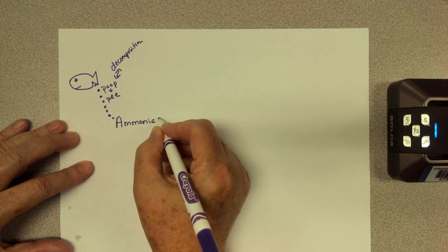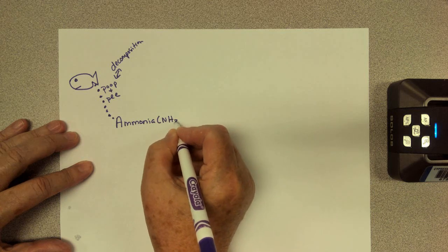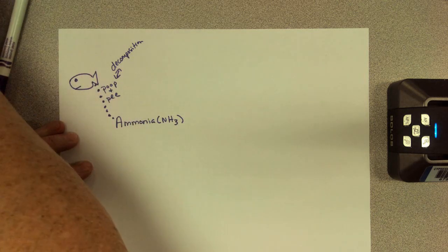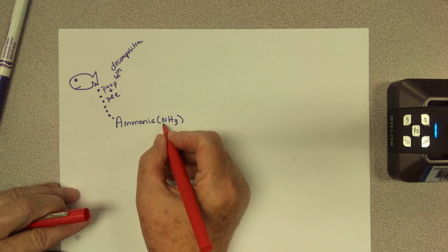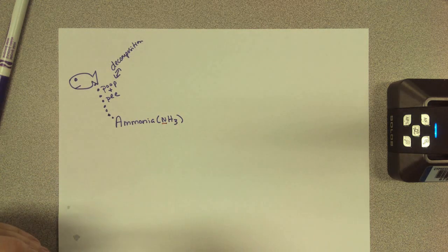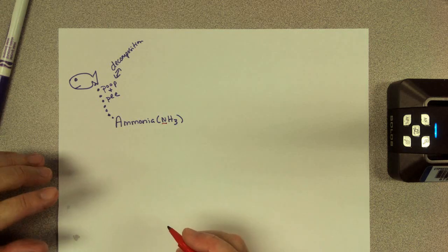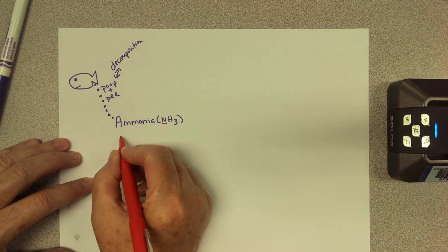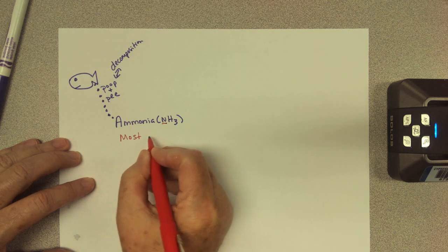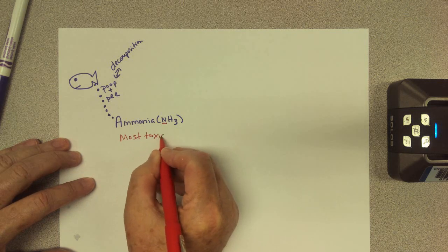Now ammonia, we have to know the chemical symbols, is NH3. And NH3 has, for those of you who didn't have chemistry, the N is nitrogen. So it has nitrogen in it. And ammonia is a pretty nasty little chemical. If you have to live in it, it's going to kill you. I'm going to label this the most toxic of the nitrogen compounds we're going to talk about.